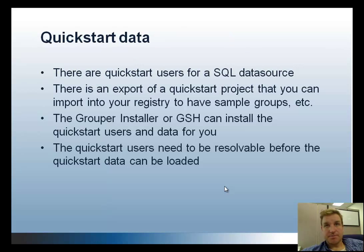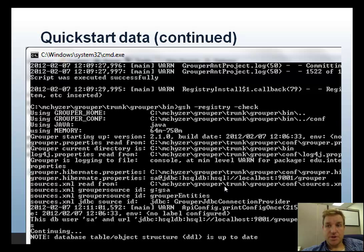There are QuickStart users in a SQL file and an export of a QuickStart project that you can import to have sample groups, folders, memberships, etc. The Grouper installer or GSH can install those QuickStart users and data for you. The QuickStart users need to be resolvable before the QuickStart data can be loaded, so you need to do the users first. Here's an example of running the users SQL file — when it's done it'll say the script was executed successfully.